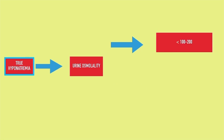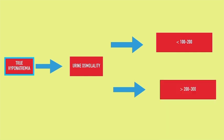The causes of hyponatremia with low urine osmolality — that is ADH-independent — are tea and toast syndrome, beer potomania, primary polydipsia, and also renal failure. If you don't have the facility to measure urine osmolality, you can use specific gravity as a proxy. Specific gravity less than 1.010 indicates hypotonic urine.